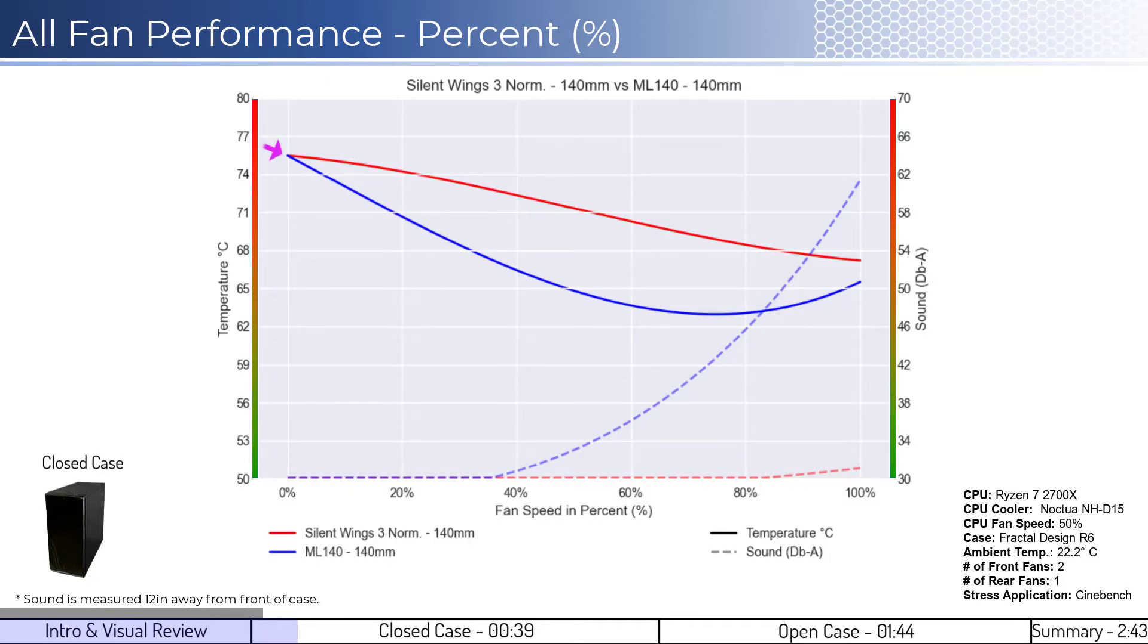When comparing the Silent Wings fan in red with the ML140 fan in blue on a percent fan speed basis, the ML140 fan has better cooling performance across all fan speeds. However, the ML140 fan reaches an inflection point at approximately 75% where the fan begins to spin too fast and starts to limit airflow.